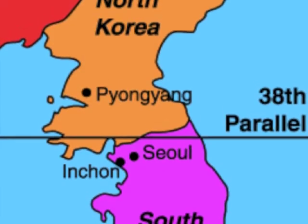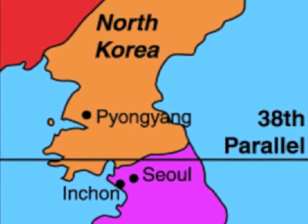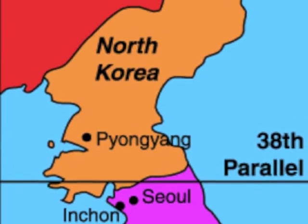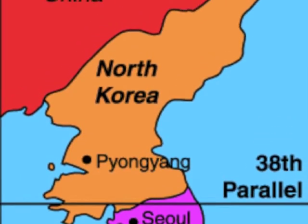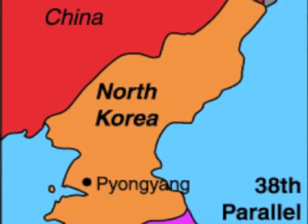It was because Syngman Rhee was the biggest anti-communist in South Korea and leaned towards democracy and capitalism. On September 8, 1945, the 38th parallel was established to divide the two Koreas.